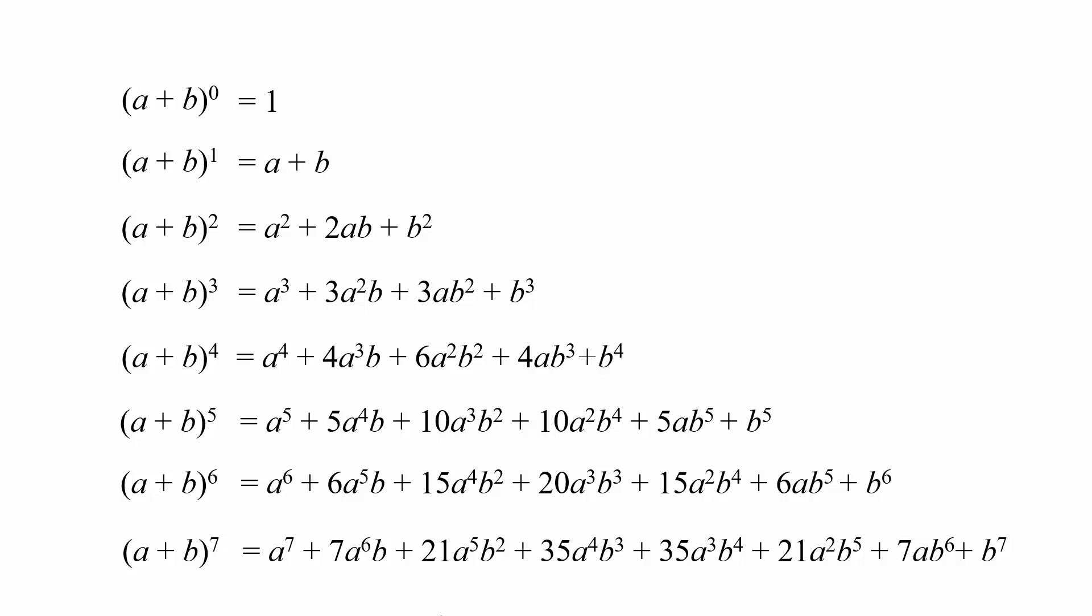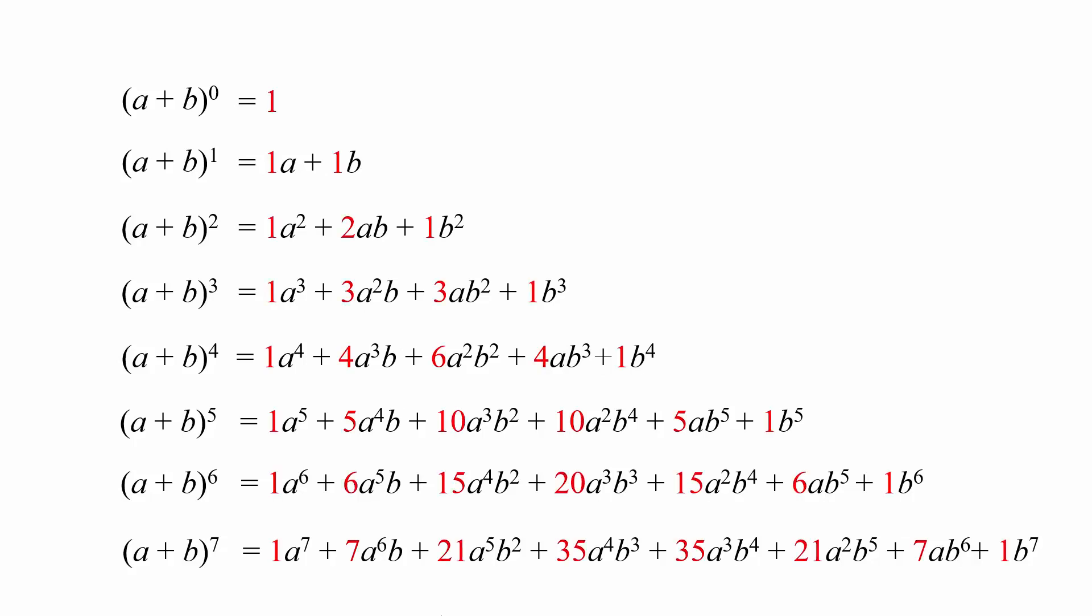In the first of this two-part video series, we looked at the expansion of the binomial brackets and looked at the coefficients. Here's the expansion up to a plus b to the power of 7. If we look at the coefficients of each term, which are the ones in red, we can list them to form our Pascal triangle.